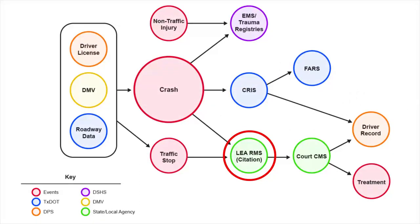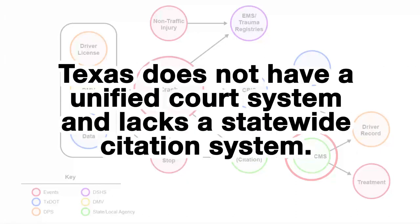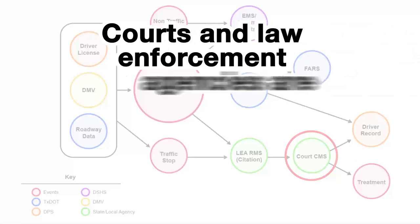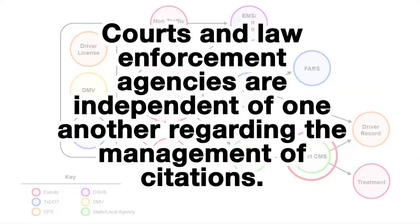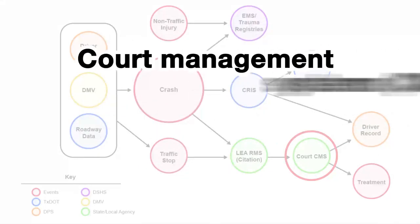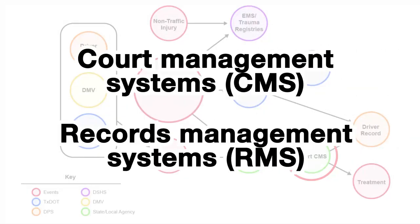Information from law enforcement agencies' RMSs flow into court CMSs. Texas does not have a unified court system and lacks a statewide citation system. Instead, courts and law enforcement agencies are independent of one another regarding the management of citations. There are numerous court management systems and records management systems in use by courts and law enforcement agencies around the state. Consequently, there is no citation data uniformity across the state and records are created and stored by each individual agency instead of a central reporting system and repository.